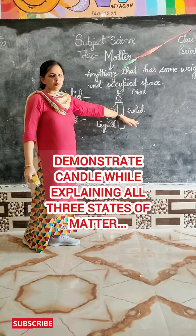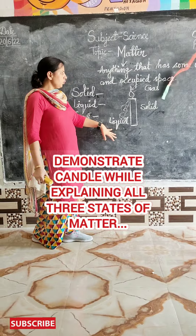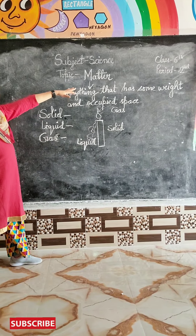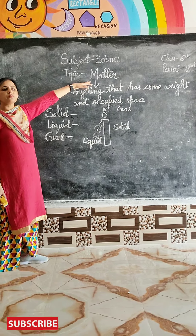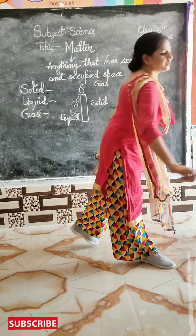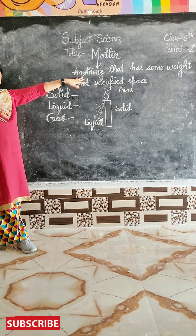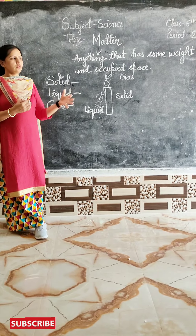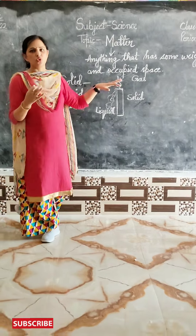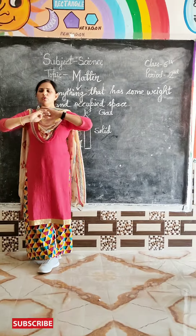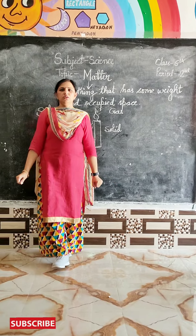So the candle is the best example of all three states — solid, liquid, and gas. There are so many examples we can take. Now you all understand what is matter. Now it's my turn — I will ask questions to you. What is matter? Anything that has some weight and occupies space is called matter. What are the three states of matter? Solid, liquid, and gas. So you all have heard this topic. Now class is over.